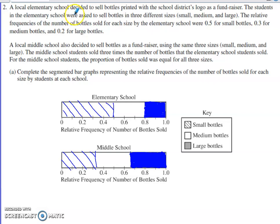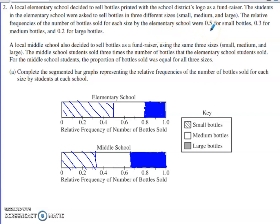The setup here is that we have a local elementary school that's going to sell bottles printed with the school's logo as a fundraiser. Students in the elementary school were selling bottles in three different sizes: small, medium, and large. The relative frequencies of the number of bottles sold for each size by the elementary school were a proportion of 0.5 for small, 0.3 for medium, and 0.2 for large.